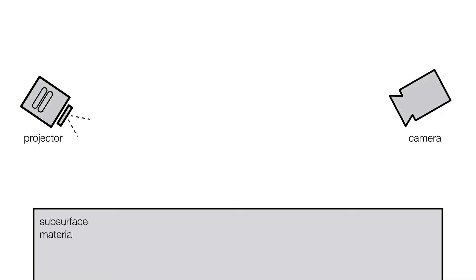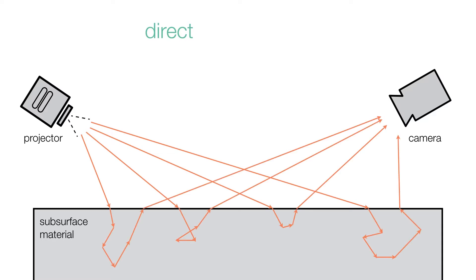Subsurface scattering is universal for almost all 3D printed materials. Some light rays are directly reflected by the surface to the camera, contributing to the direct component of the image. Other light rays penetrate the surface and scatter inside the medium before reaching the camera, contributing to the global component.